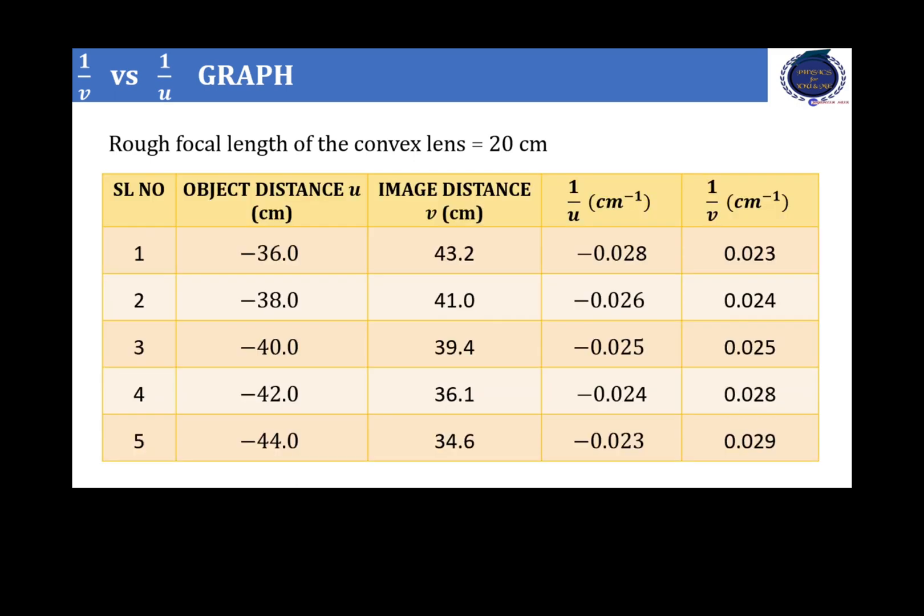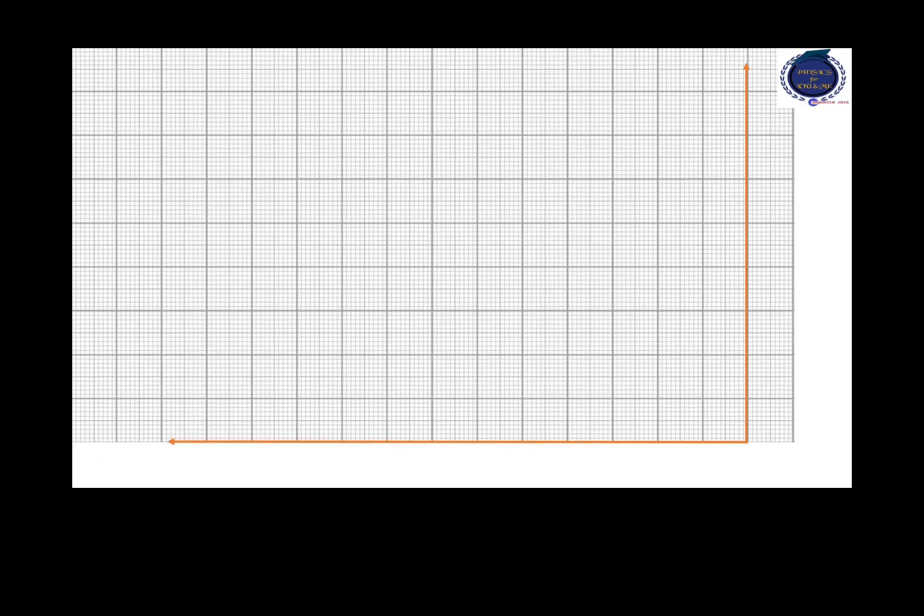Now, let us consider another example, where we are plotting the reciprocal of the image distance along the y-axis and reciprocal of the object distance along the x-axis. This is the graph plotted for determining the focal length of the convex lens. The focal length of the convex lens is 20 centimeter. And in the table, the values given are actually done by a student in a laboratory. We can see that 1 by u which is plotted along the x-axis is negative by using the sign convention. 1 by v is positive. Therefore, we have to plot a graph in the second quadrant where x is negative, y is positive.